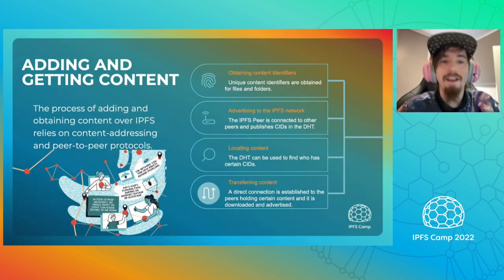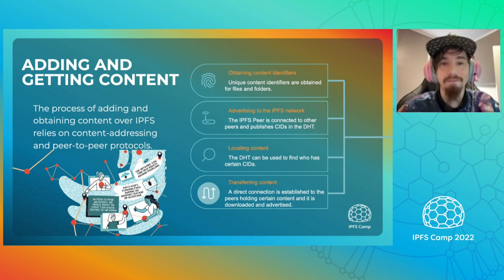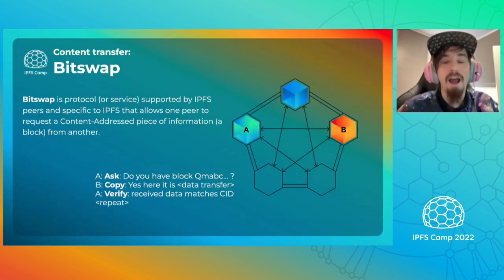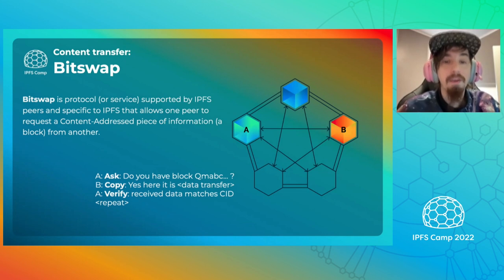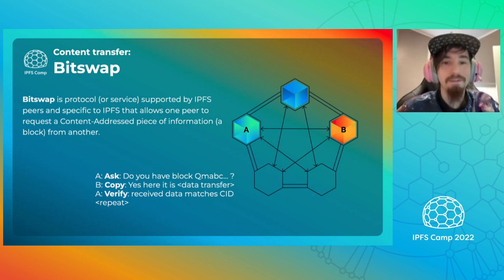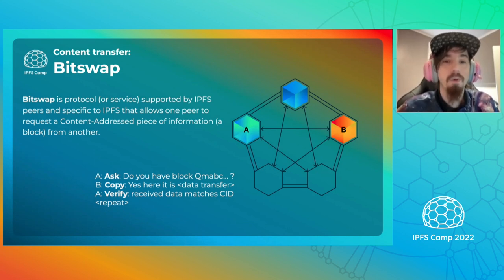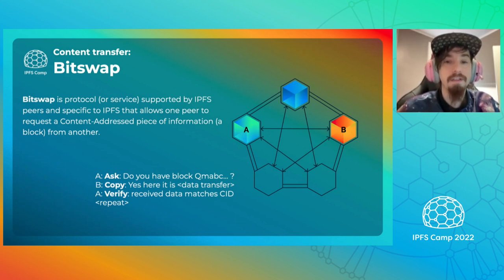Now that we've gone over obtaining a CID, advertising it on the network, and locating content, let's take a brief look at transferring content. The last step to retrieve content in IPFS is to download it. Because we know how to contact the peer holding the content and we know what content we want, we can connect, receive, and verify it. This means that any content received through IPFS is authentic and matches the request. Once content is downloaded, the local peer will advertise itself as a provider for that content on the DHT, making it available to other peers for download. The protocol we use to download files is called BitSwap, and also works for quick discovery by asking all neighboring peers whether they have the content if it can't be found in the DHT.